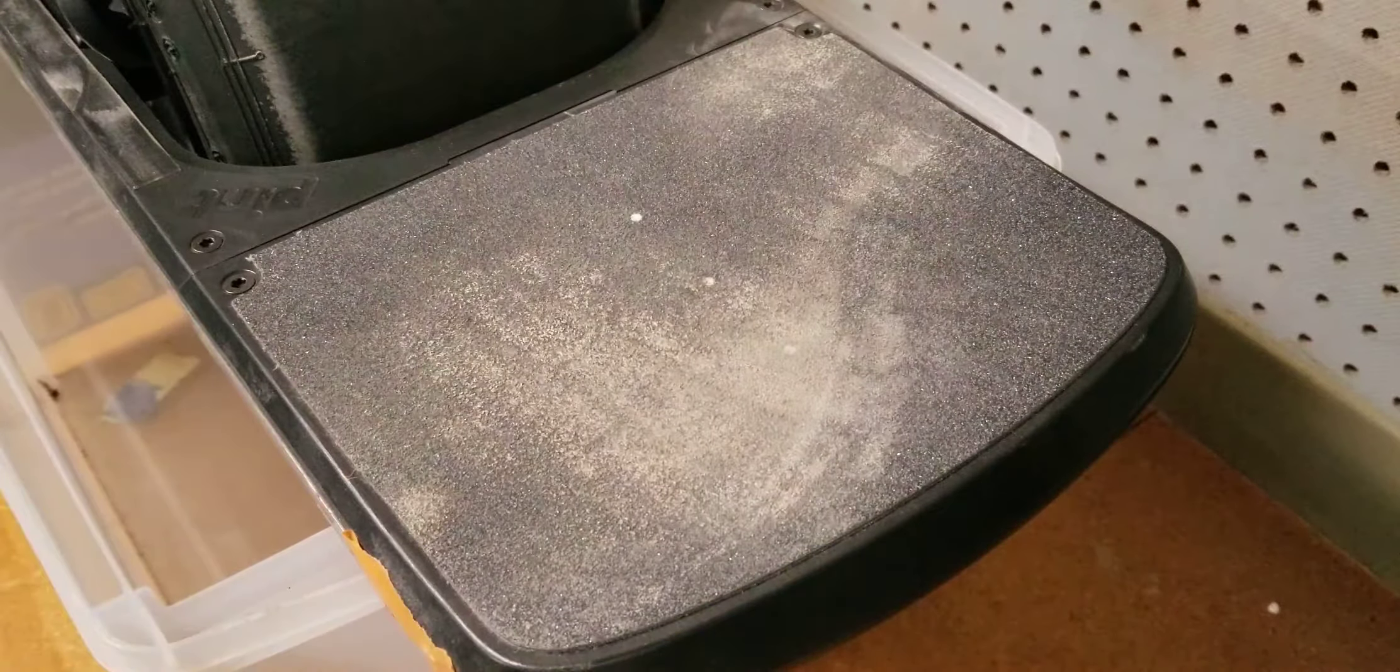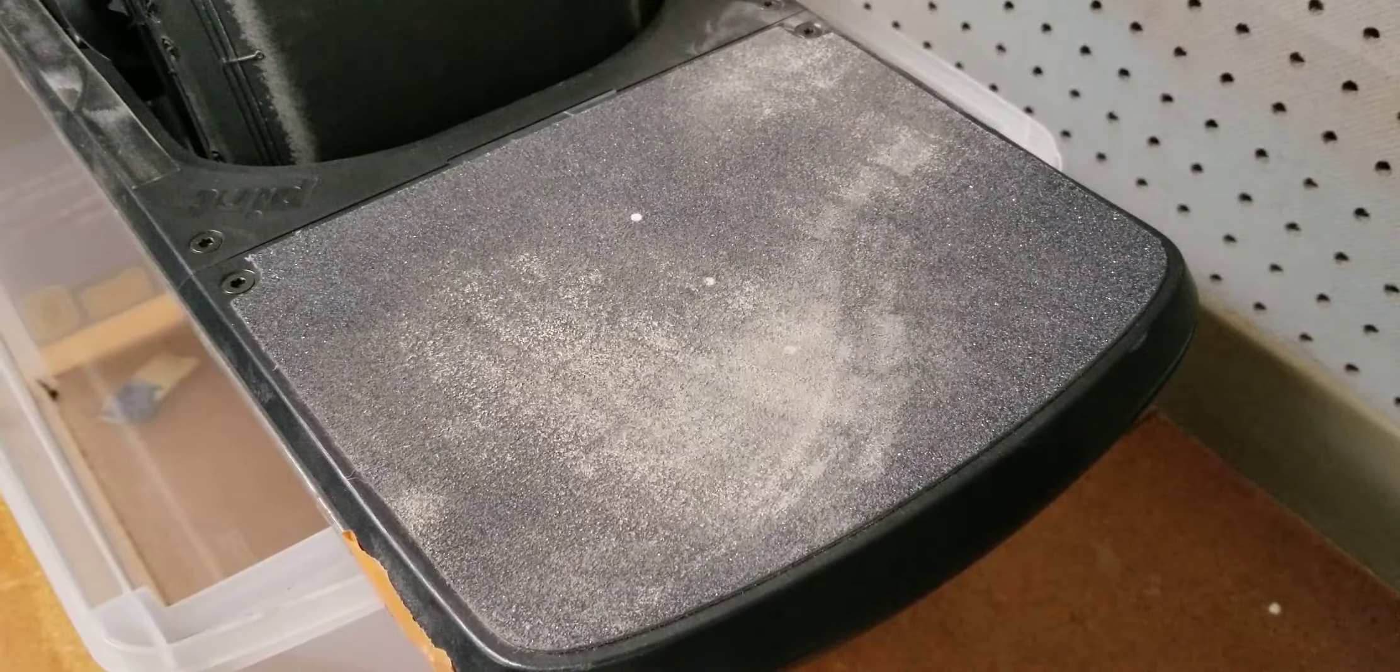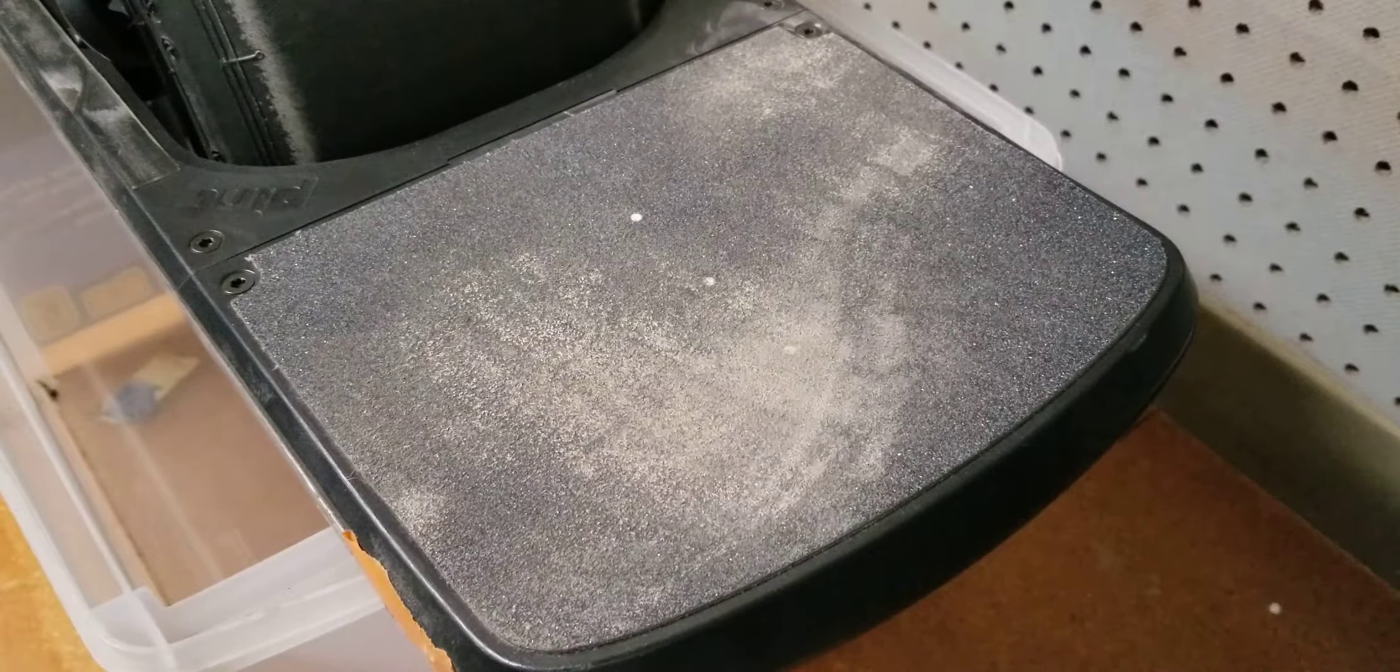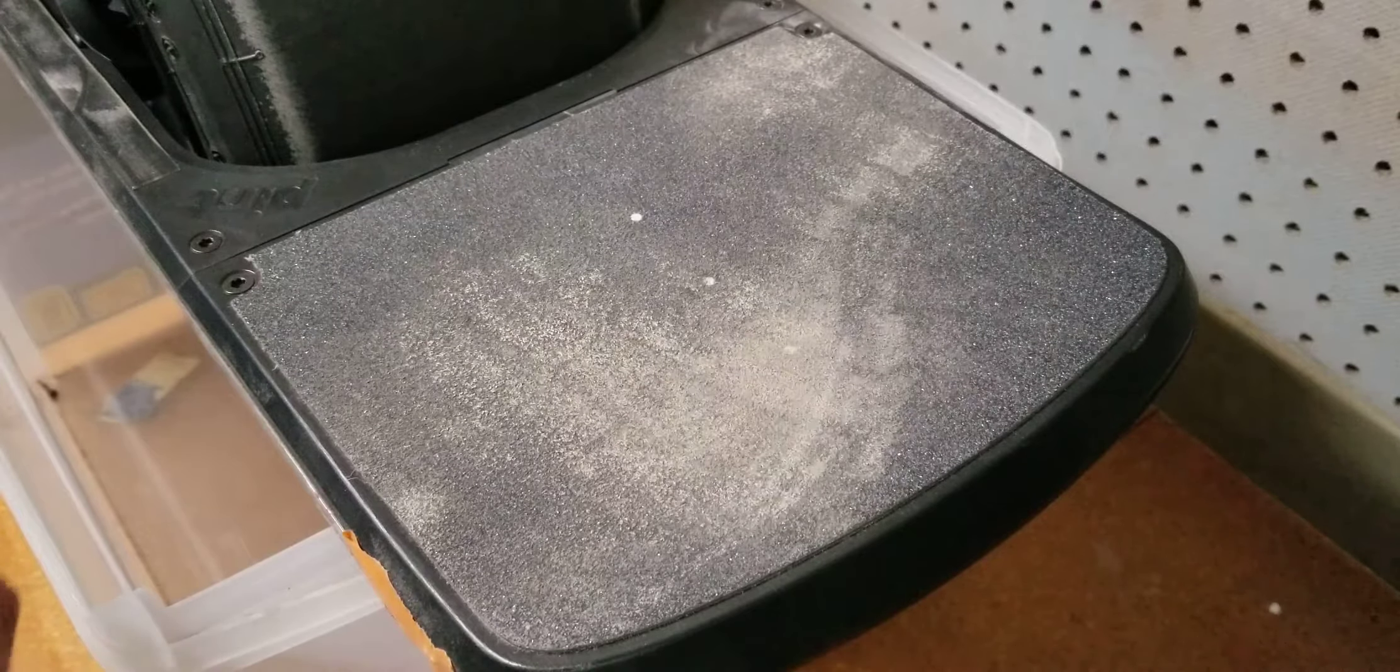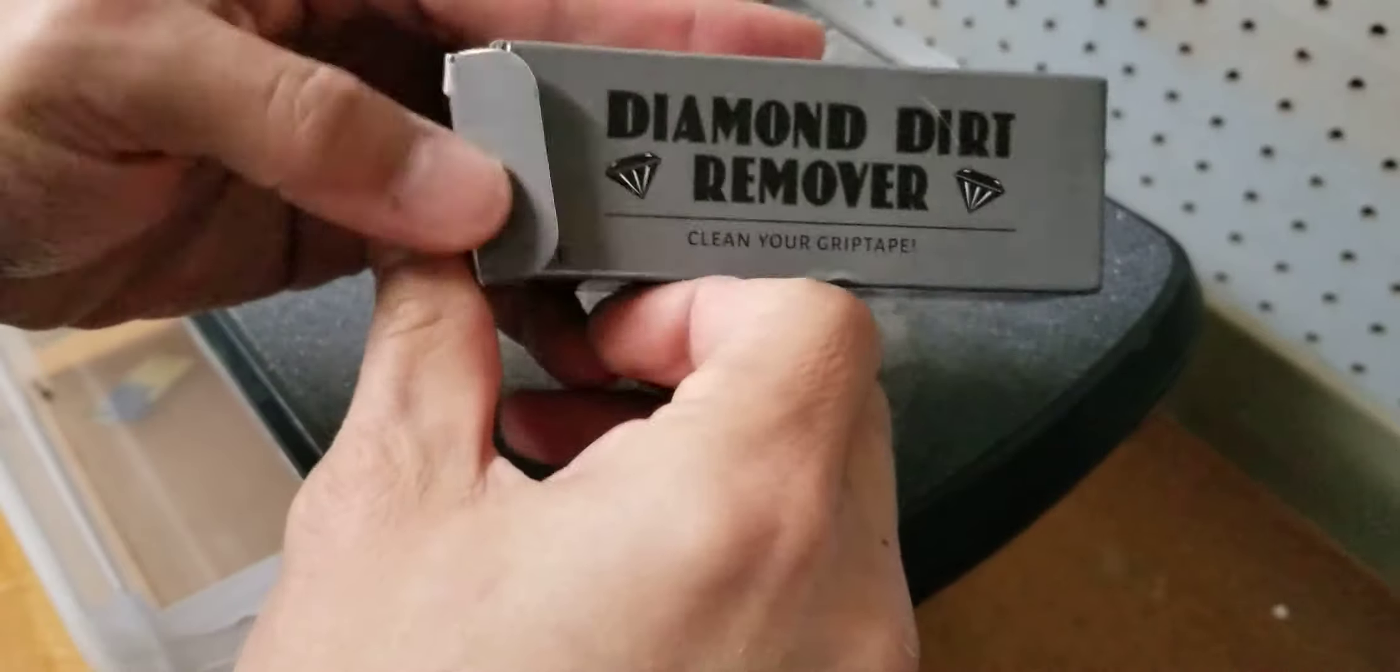I think Onewheel does sell something pretty similar which comes with a handle on one side and then a smaller grip tape cleaner on the other side. So this one does not come with a handle. This is the package you'll be getting in the mail.